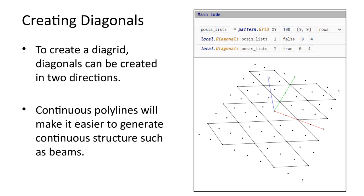In order to create a diagrid pattern, the local.diagonals function can be called two times. Once for each direction of lines.